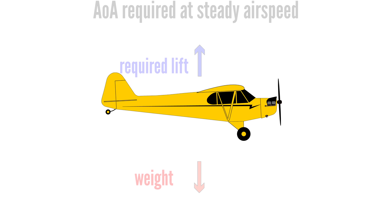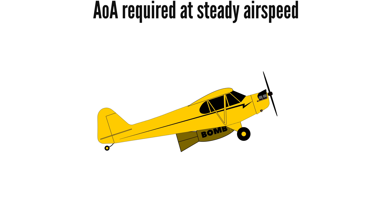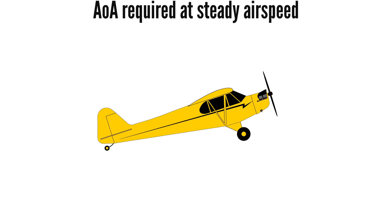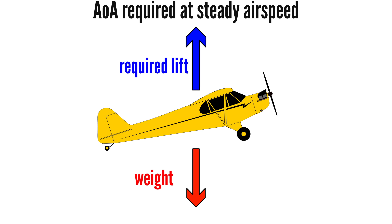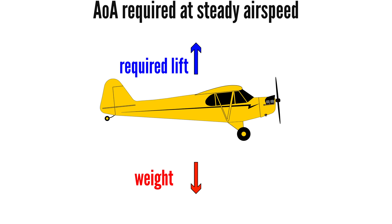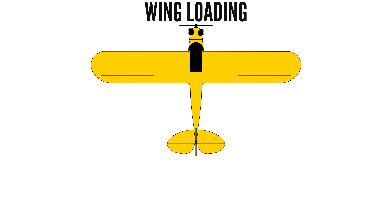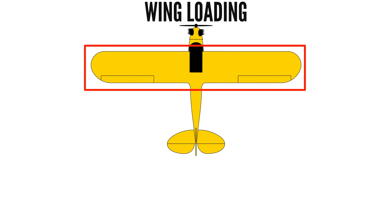Weight has a direct impact on the amount of lift required, and thus the angle of attack required. If we have a wing on a plane just about to stall, and we could somehow shed half the weight of the plane, the wing would not be on the edge of the stall anymore, as less lift is required to maintain altitude, and thus a lower angle of attack is required. This is called wing loading — simply the amount of weight carried per area of wing. To calculate wing loading, take the total weight of a plane divided by the wing area.